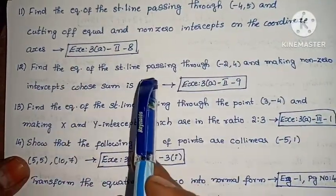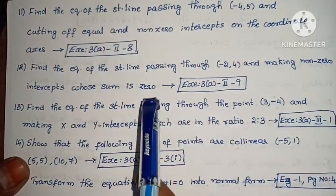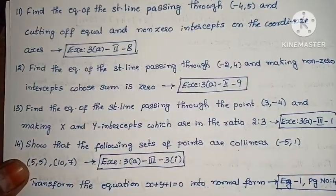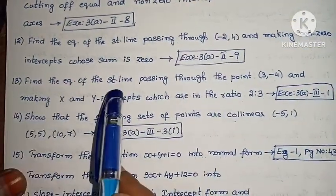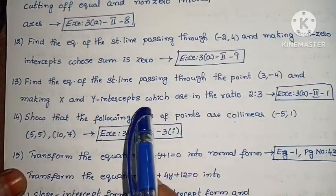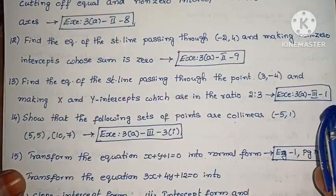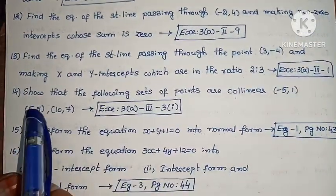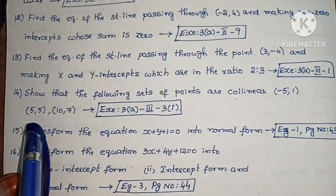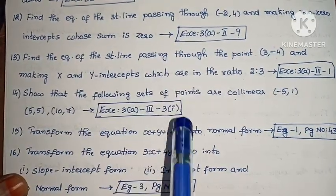Next, find the equation of the straight line passing through (-2, 4) and making non-zero intercepts whose sum is 0. Next, find the equation of the straight line passing through the point (3, -4) and making x and y intercepts which are in the ratio 2:3. Next, show that the following set of points are collinear: (-5, 1), (5, 5), (10, 7).